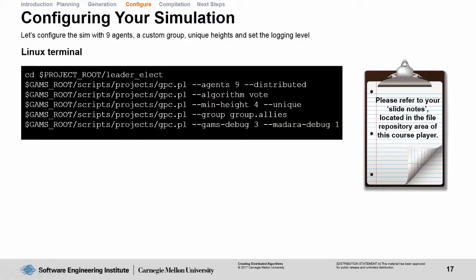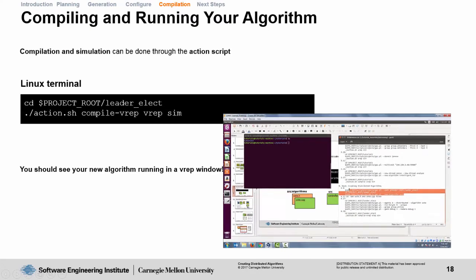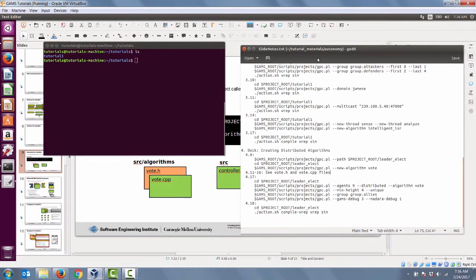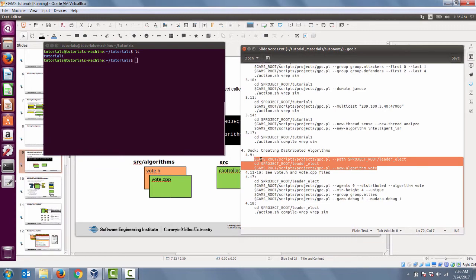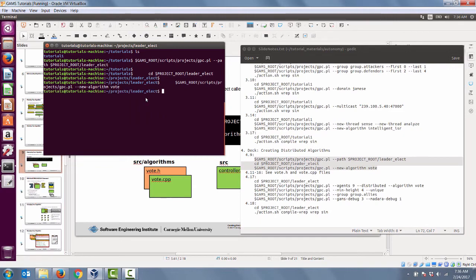The fourth thing we do to GPC is we specify a group of this group.allies, which will include all the agents we've created. The last thing we do is set the GAMS debug levels to 3 and the MADARA debug levels to 1. 1 is essentially warnings and errors, and 3 are major events. Compilation of this new algorithm can be done through the action.sh script that you generate when you create a new project with GPC.pl. We've covered a lot of ground from slide 9 through 17, so let's take a moment and walk through each step to demonstrate our new algorithm. First, we copy the lines from slide 9 to create a new GAMS project with our vote algorithm.